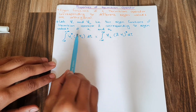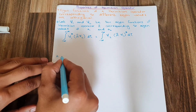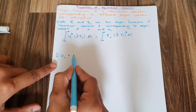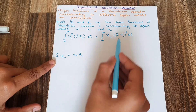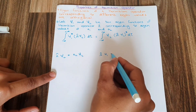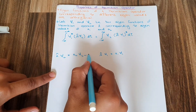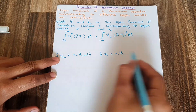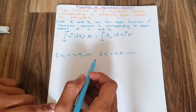After applying operator A on ψ₂, I get an answer equal to a₂ψ₂ — call this equation number two. And applying operator A on ψ₁ gives a₁ψ₁ — call this equation number one. So we have two eigenvalue equations established.